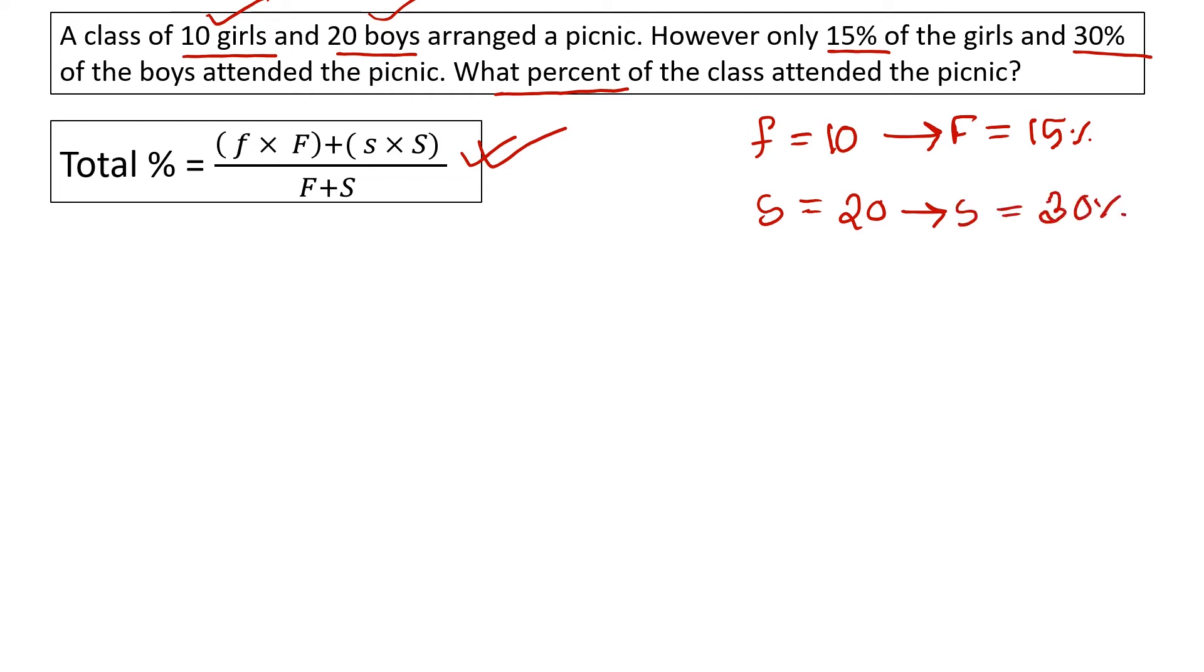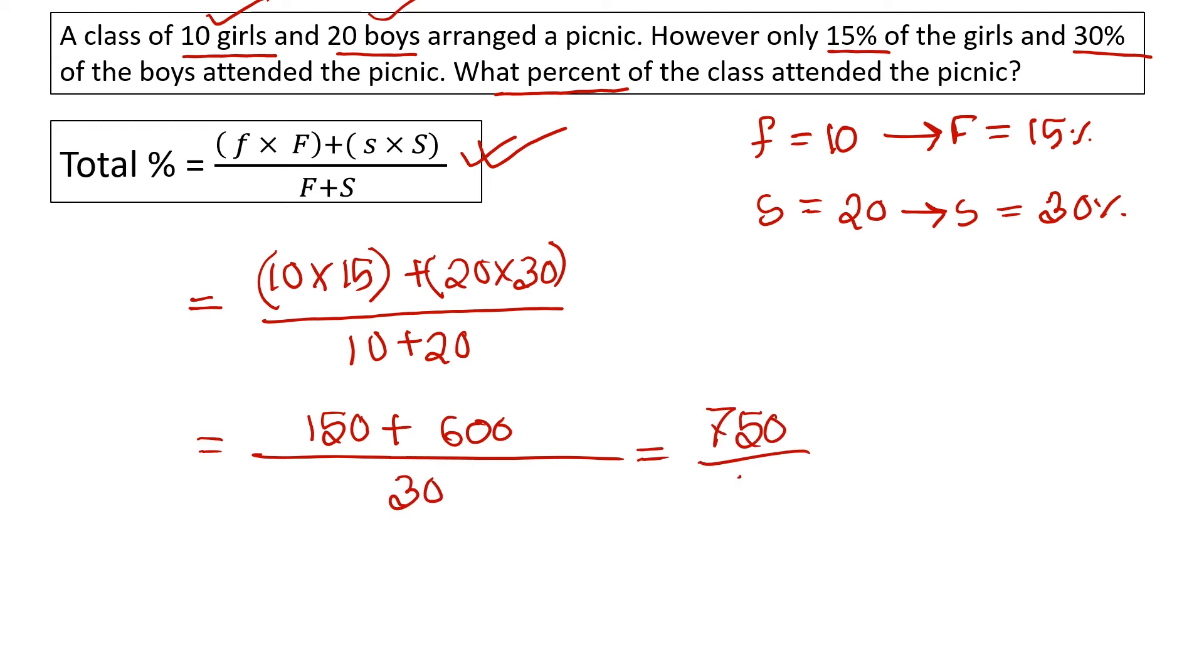The total is 30 students. We calculate 10 times 15% plus 20 times 30%, divided by 10 plus 20. This equals 150 plus 600 divided by 30, which gives us 20% of the class attended the picnic.